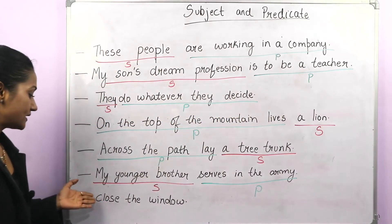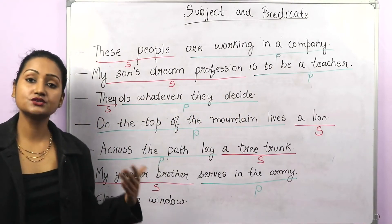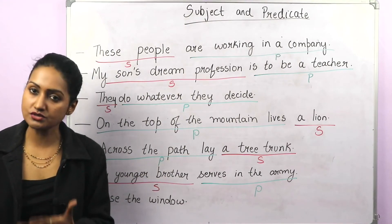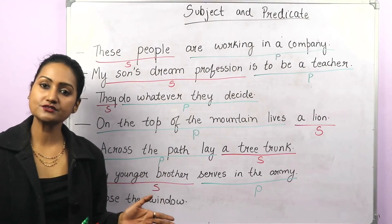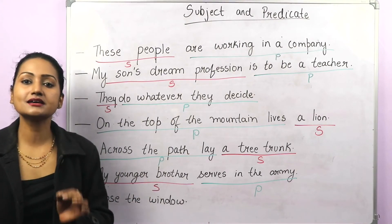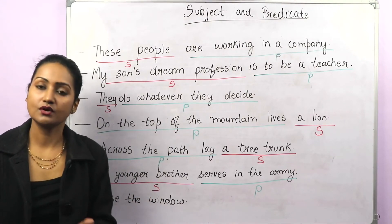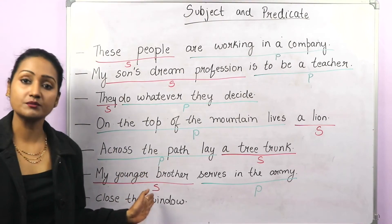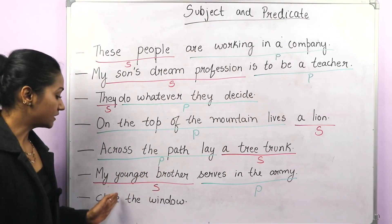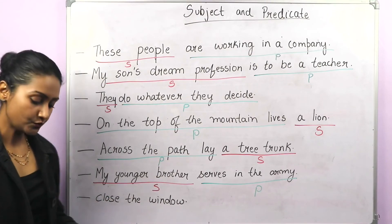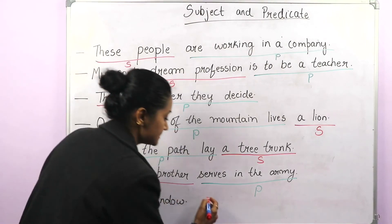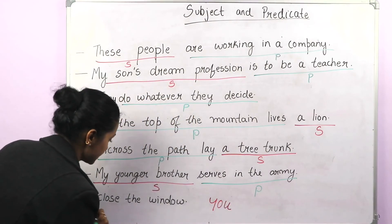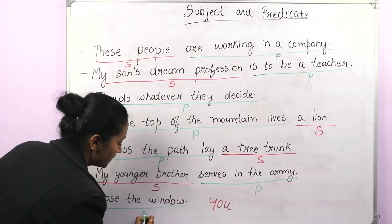Now the last one: 'Close the window.' I told you that whenever there are instructions, commands, or orders, the subject is hidden — which is always 'you.' So in this sentence, since it is a command, 'close the window' is the predicate and the subject is 'you.' So 'you' is the subject and 'close the window' is the predicate.